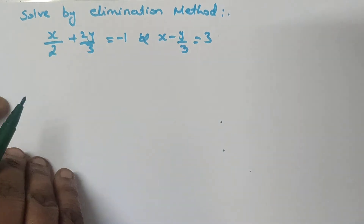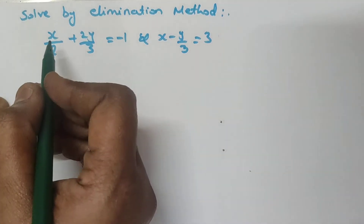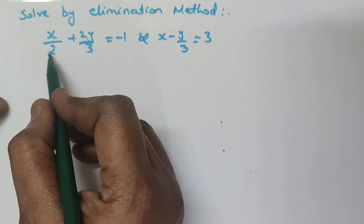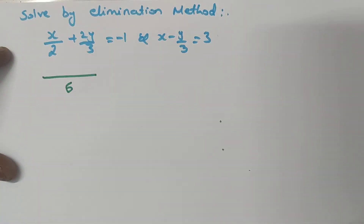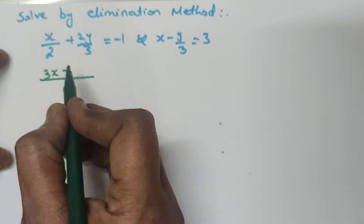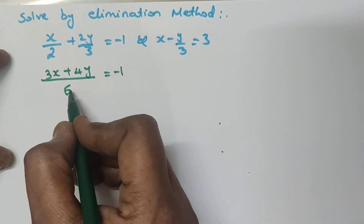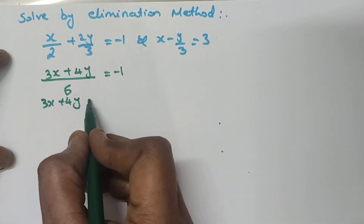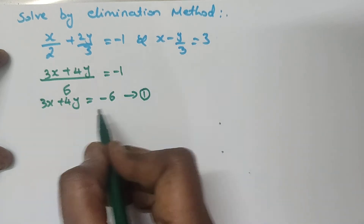These equations are not in the general form of a linear equation, so first we should convert them. Taking the first equation, the denominators are 2 and 3, so the common denominator will be 6. Cross multiplying: 3 into x gives 3x, and 2 into 2y gives 4y, equal to minus 1. Bringing 6 to the other side: 3x plus 4y equals minus 6. This is the first equation.